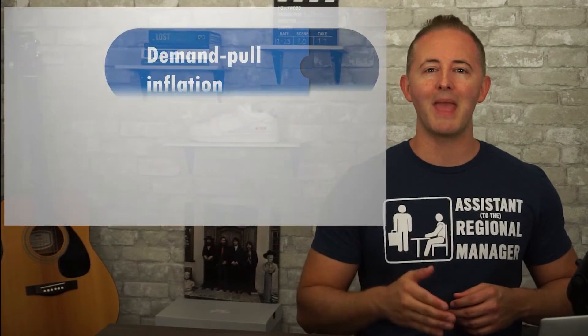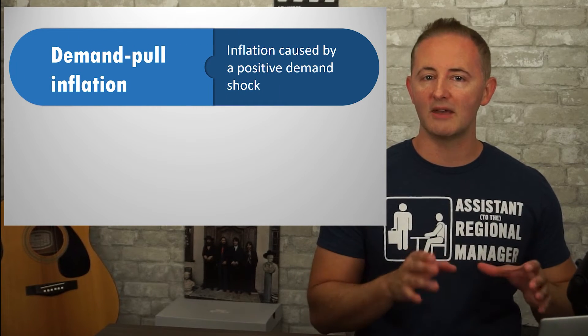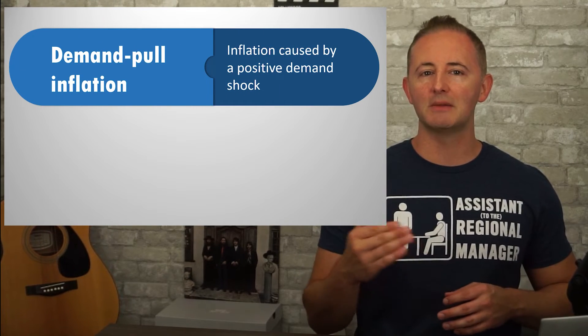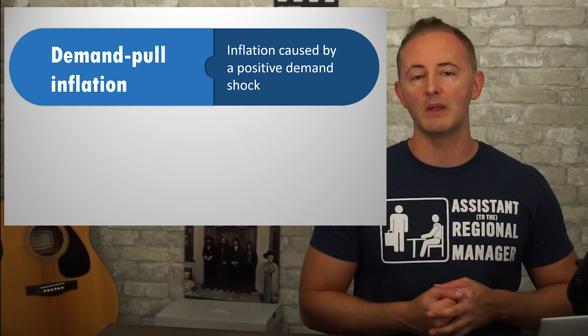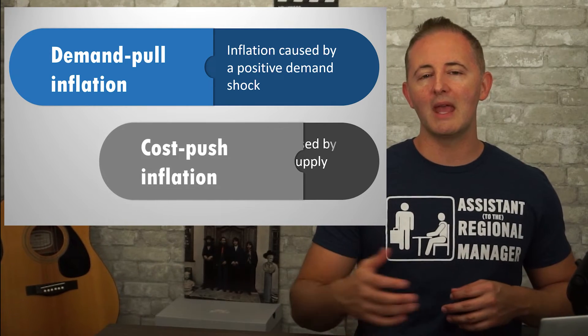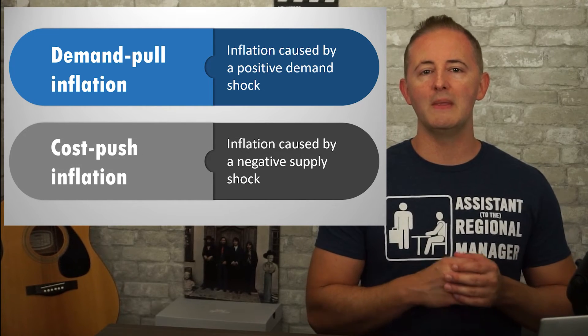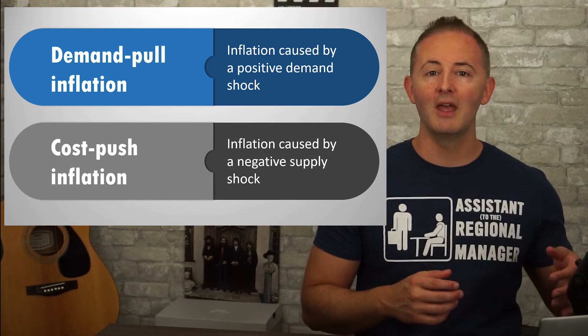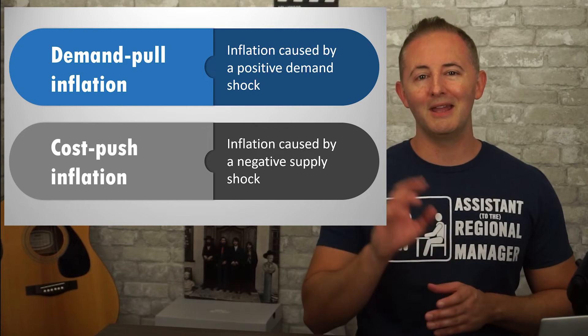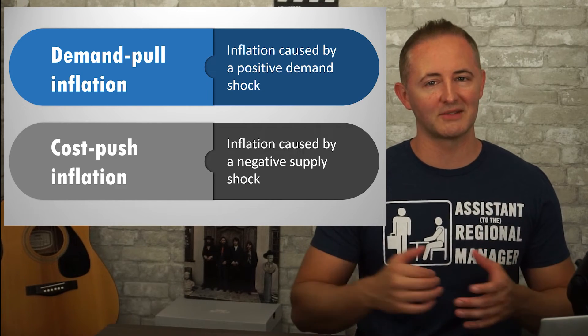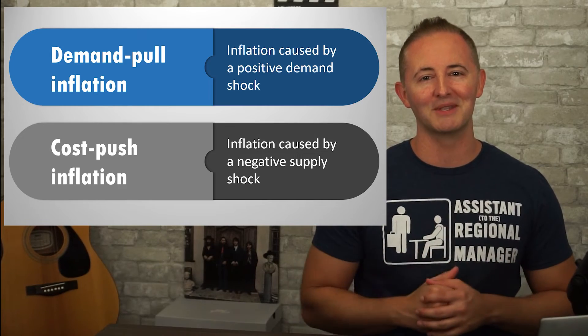So those are our four possible shifts. The last thing to point out is that there are two different ways we can see inflation on this model. The first is caused by a positive demand shock where the AD curve shifts to the right, and this is known as demand-pull inflation, meaning that the cause of the inflation is the increased demand and spending by households, businesses, and governments. The other way we get inflation is from a negative supply shock when the SRAS curve shifts left, and this is known as cost-push inflation. But in Unit 4 we'll get into the real causes of inflation, so remember these terms — there's more coming still.